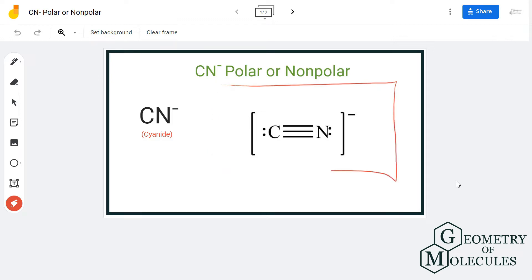Here is the Lewis structure of CN minus ion, in which carbon is forming a triple bond with nitrogen. There is a lone pair of electrons on both carbon and nitrogen atoms.